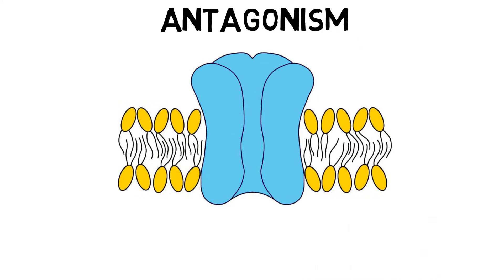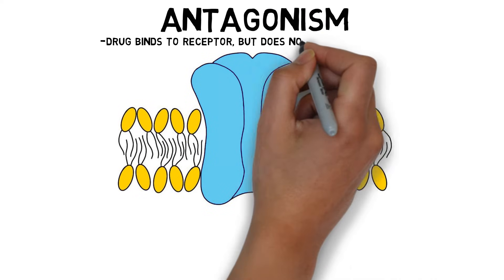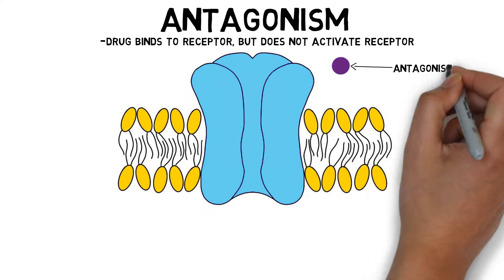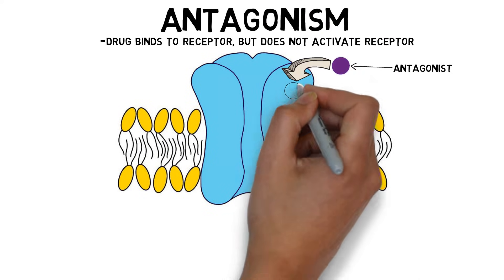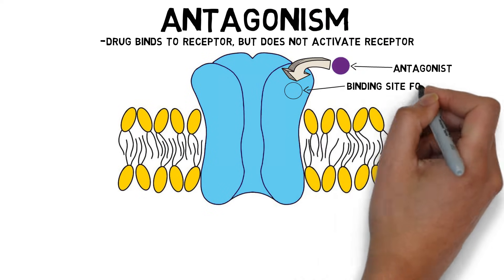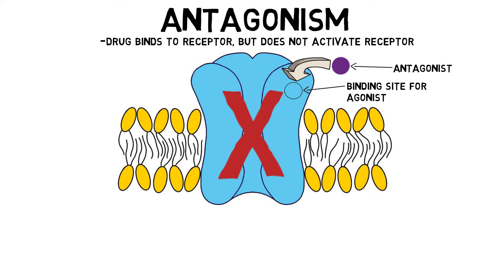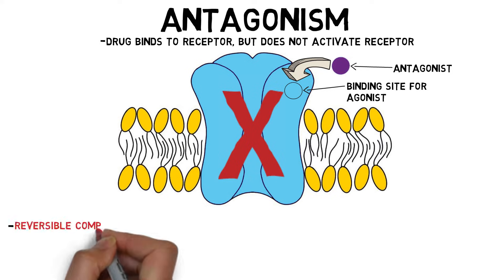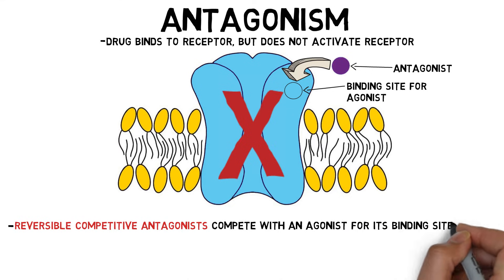Receptor antagonism occurs when a drug binds to a receptor but does not activate the receptor. In the process, it interferes with the ability of agonists to activate the receptor. The most common type of antagonism is reversible competitive antagonism, where a drug competes with an agonist for its binding site, limiting the amount of agonist that can bind to the receptor at the same time.